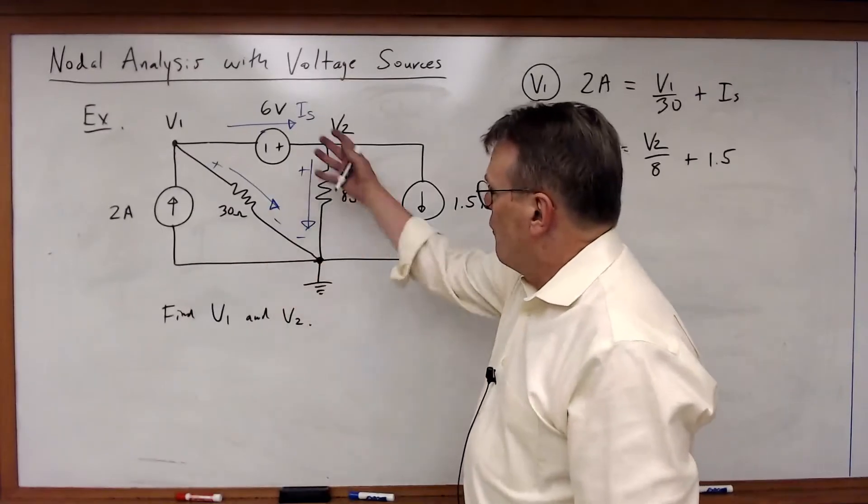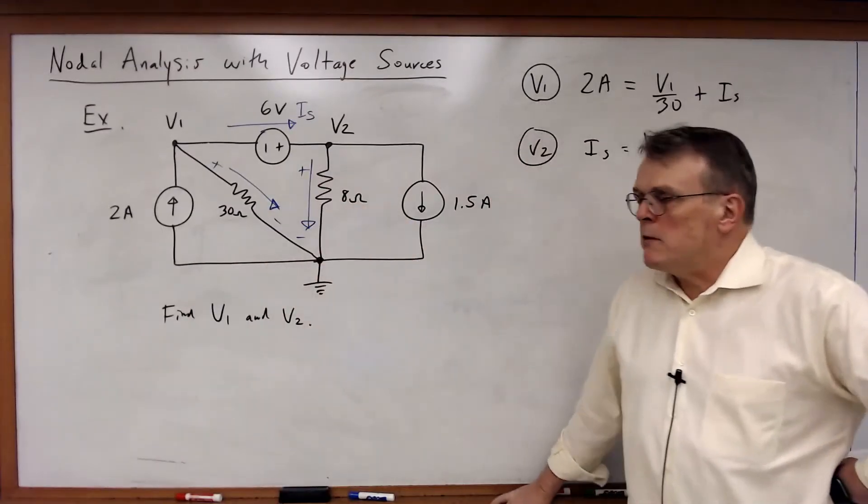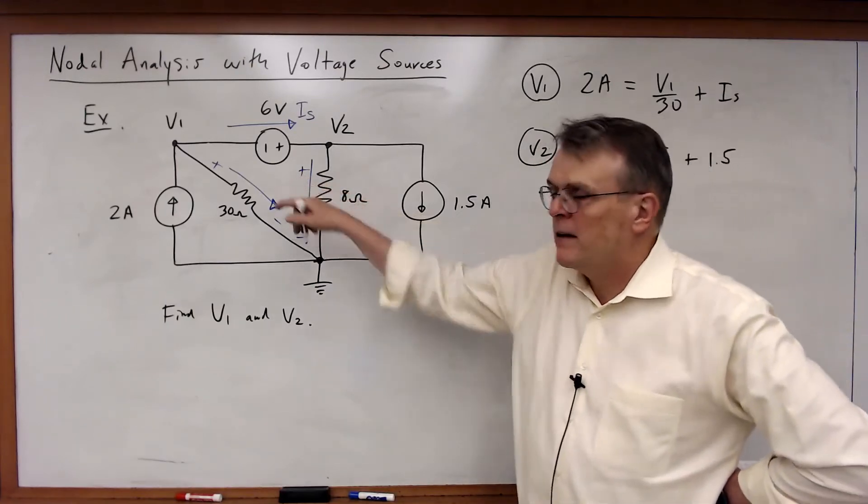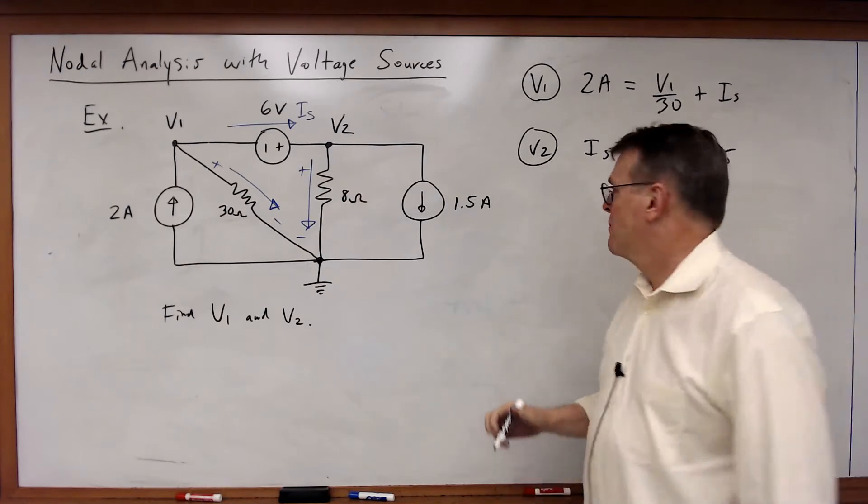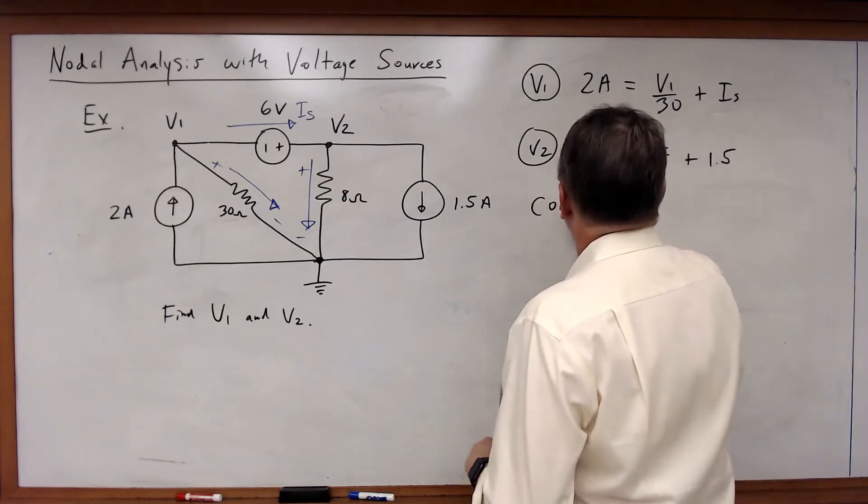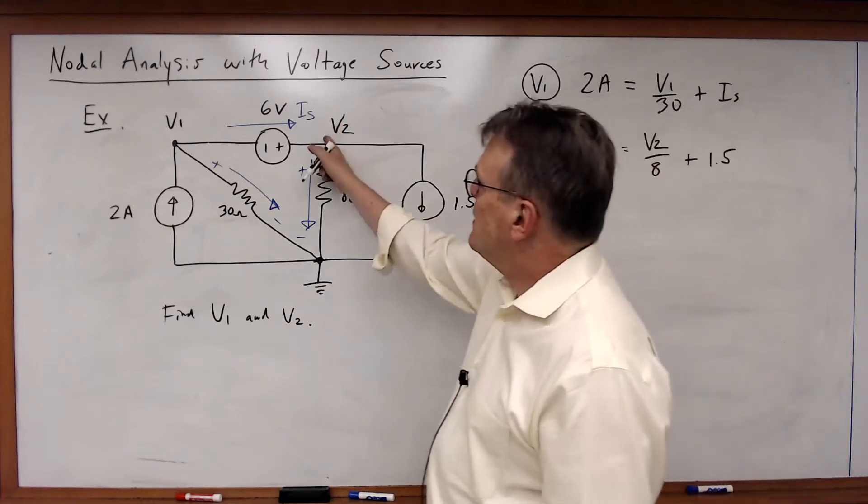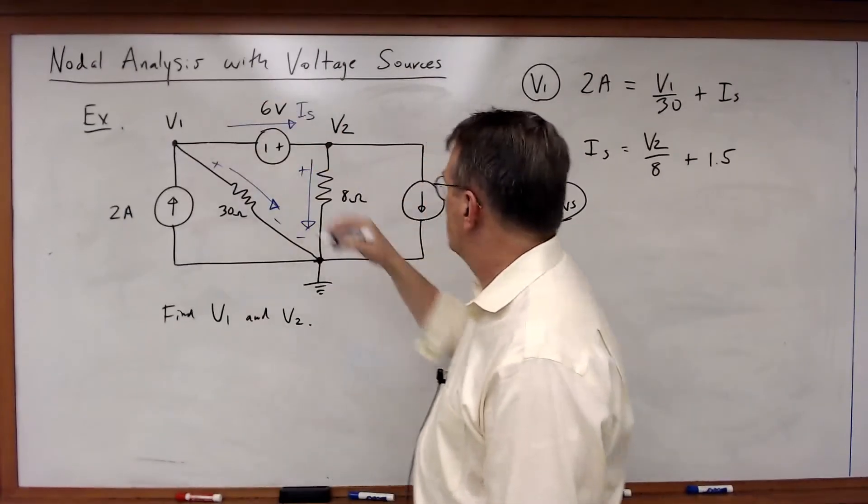Well, there are no dependent sources. So there's no dependent source variable. But there is a voltage source. There's a constraint. What's my constraint equation? V2 minus V1 is 6 volts.